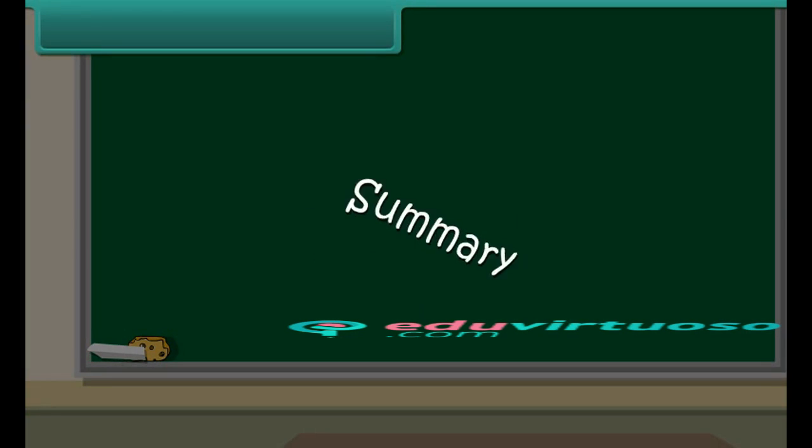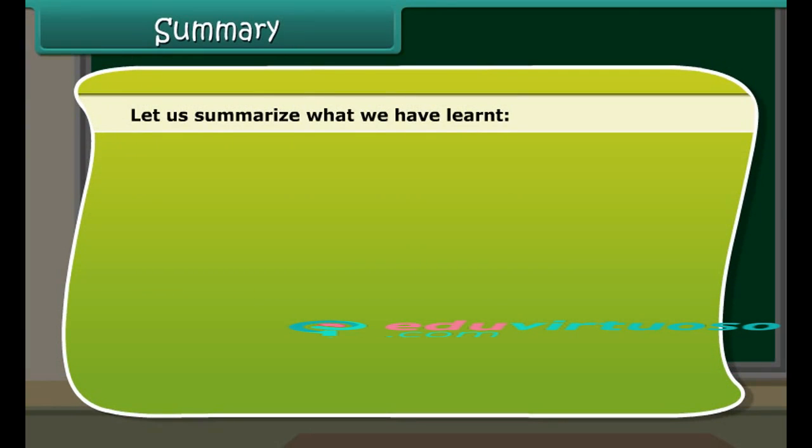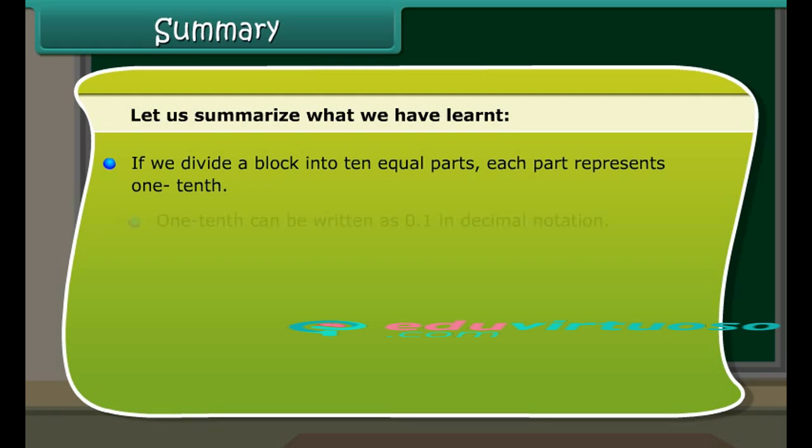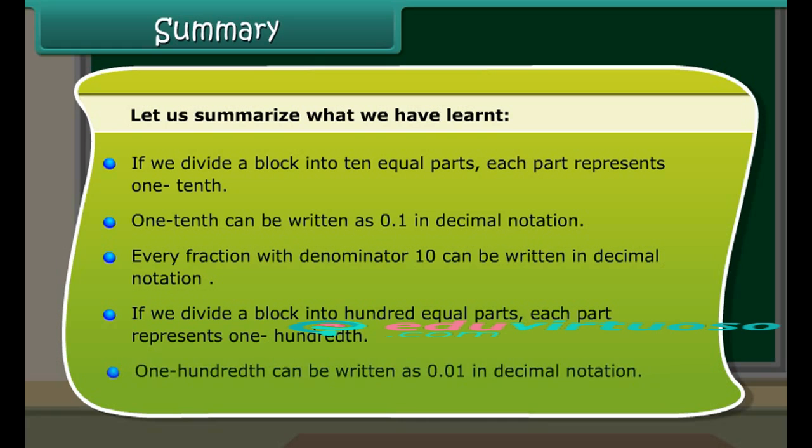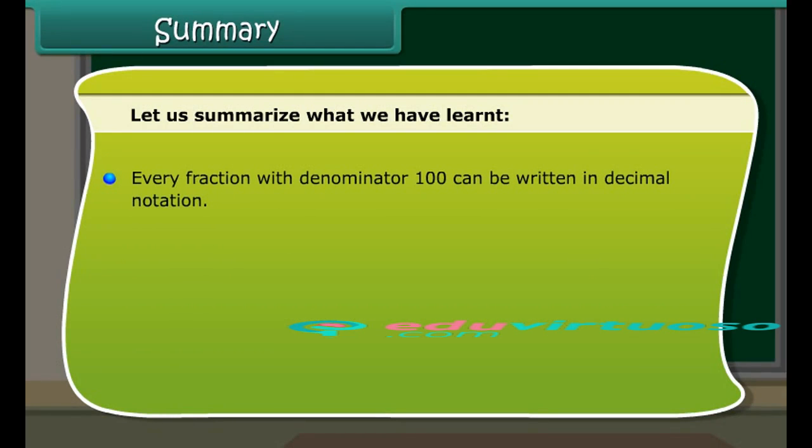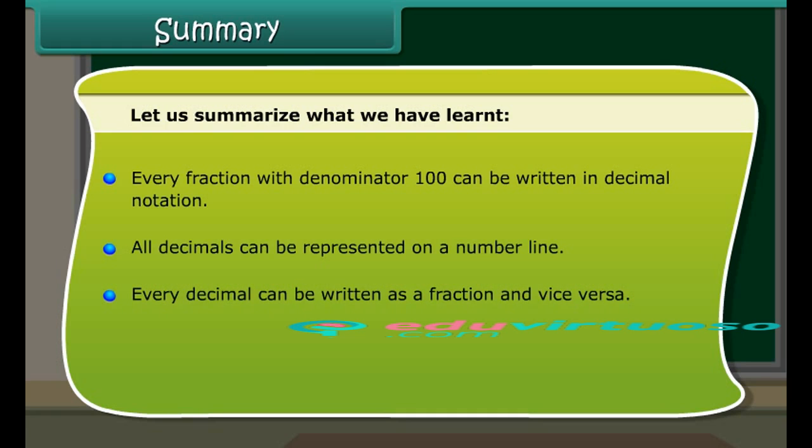Summary. Let us summarize what we have learnt. If we divide a block into ten equal parts, each part represents one-tenth. One-tenth can be written as 0.1 in decimal notation. Every fraction with denominator ten can be written in decimal notation. All decimals can be represented on a number line. Every decimal can be written as a fraction and vice versa. Any two decimals can be compared among themselves.